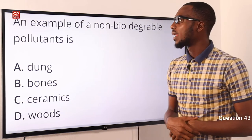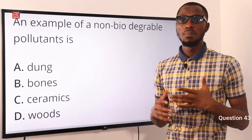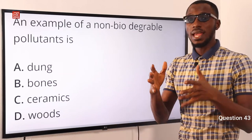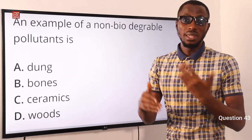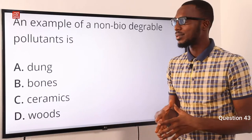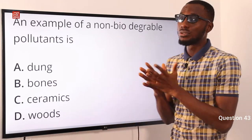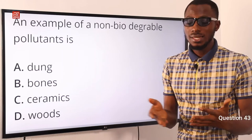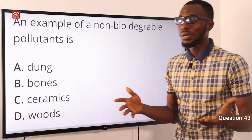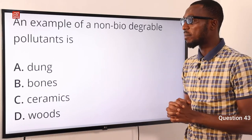Question 43. An example of a non-biodegradable pollutant is what? When something is biodegradable, it is an organic material that can be broken down to give carbon dioxide, water, and other simple organic molecules — that includes dung, bones, and wood. Non-biodegradable materials include paints, chemicals, and rubber — things that cannot be broken down under the action of microorganisms. The correct option is option C for ceramics.